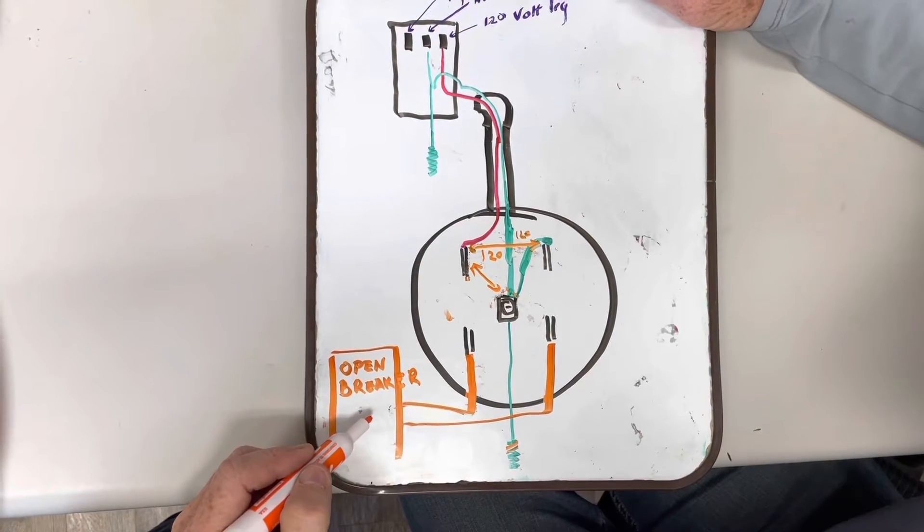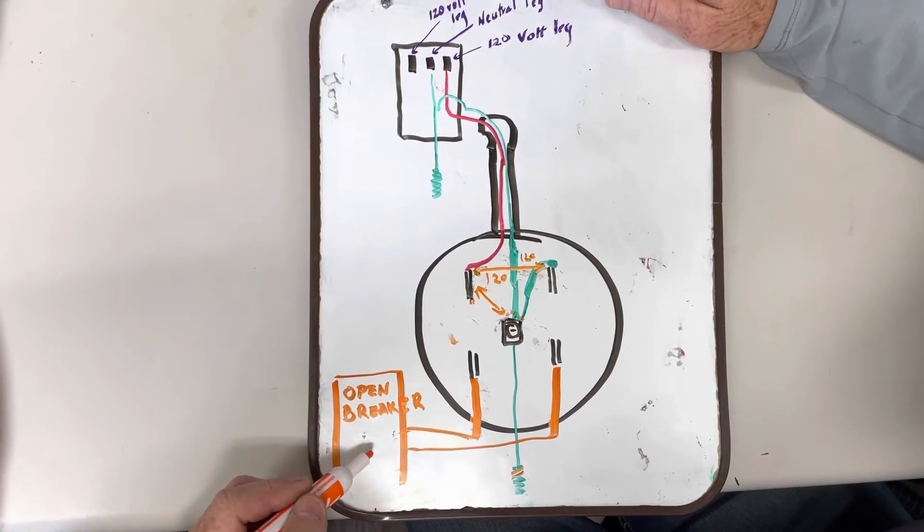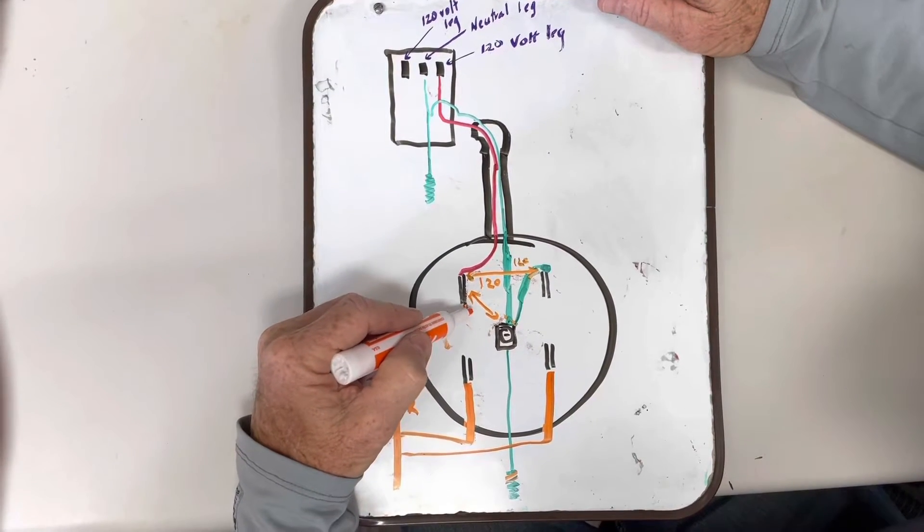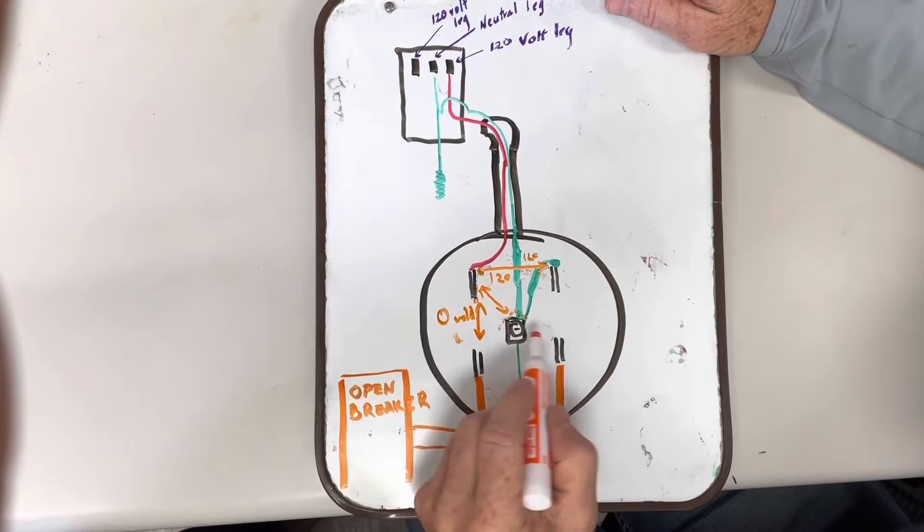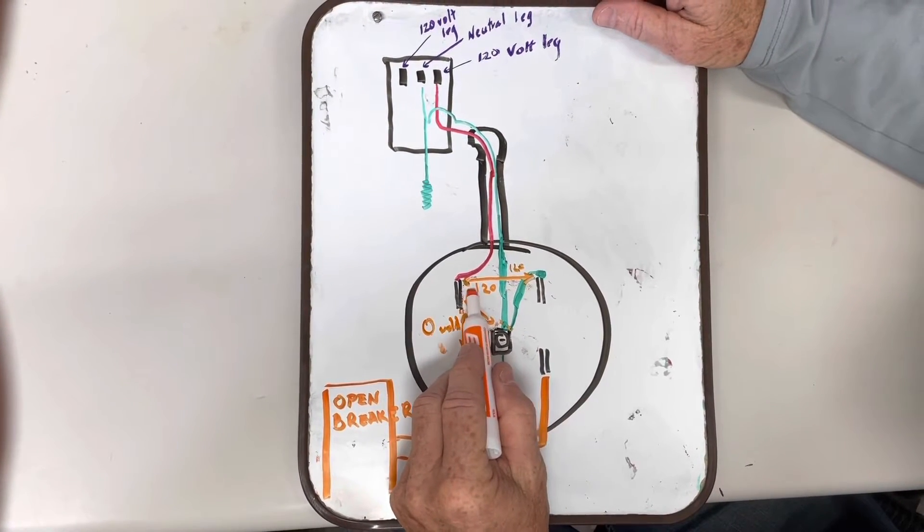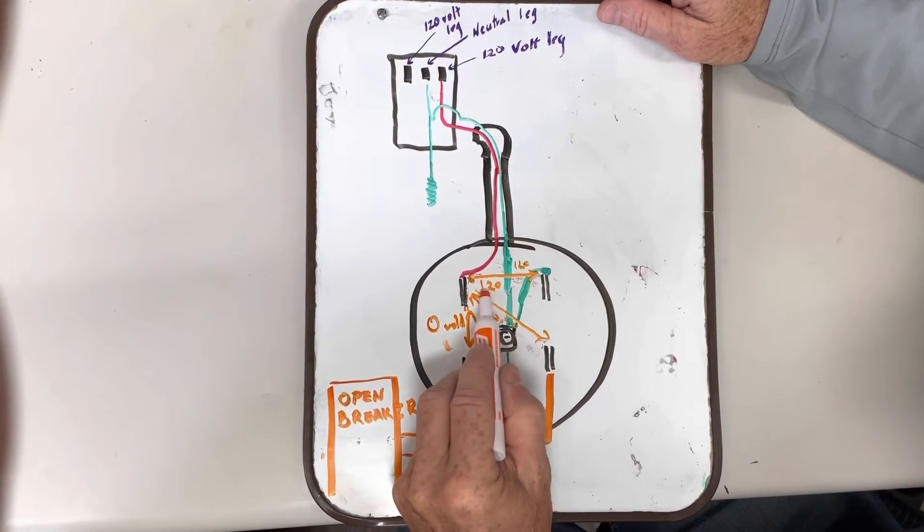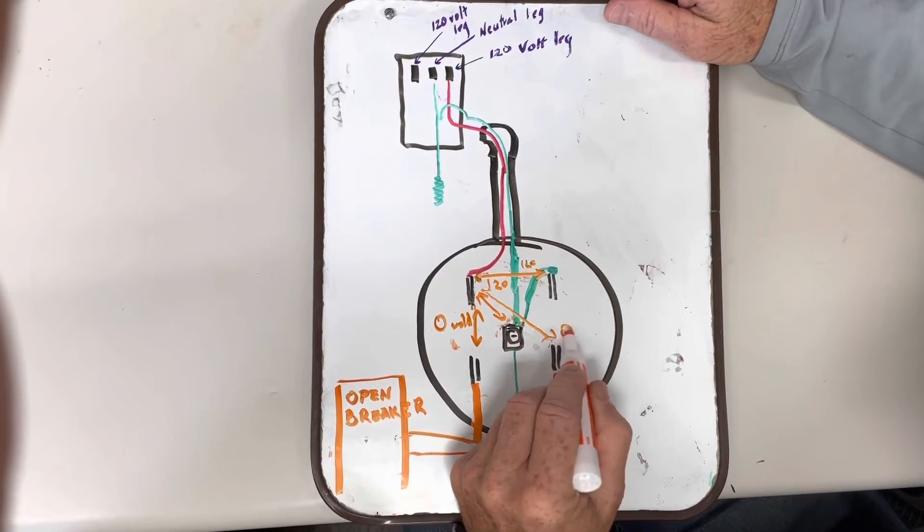With the breaker being open, we're doing all these checks. So I forgot to mention that, but from here to here, we're going to get zero volts. And from the hot lug here, all the way to this lug, we should get zero volts.